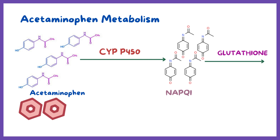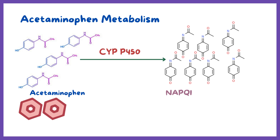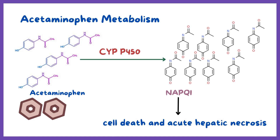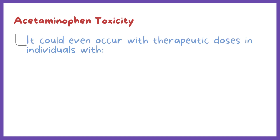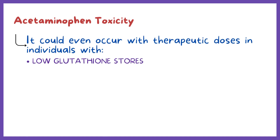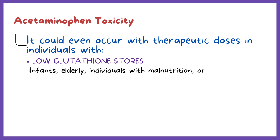Now, because there's a limited amount of glutathione in hepatocytes, high levels of NAPQI will deplete it, leading to a buildup of NAPQI. This toxic metabolite will start causing cell death and acute hepatic necrosis. It's important to note that this could even occur with therapeutic doses in individuals with low glutathione stores, such as infants, the elderly, individuals with malnutrition, or those with a genetic condition called glutathione synthesis deficiency.